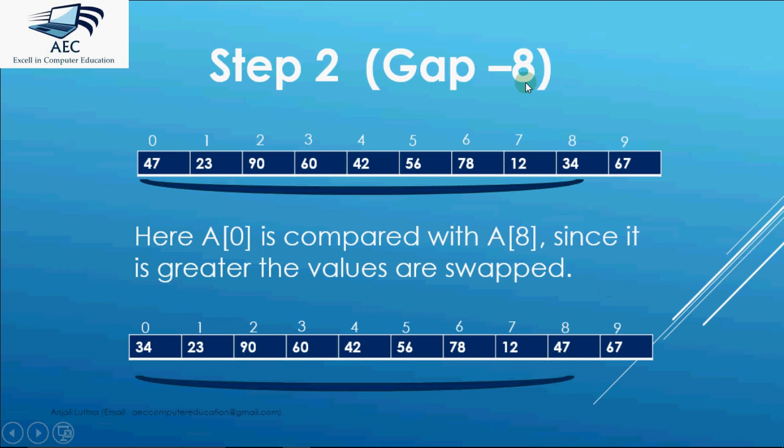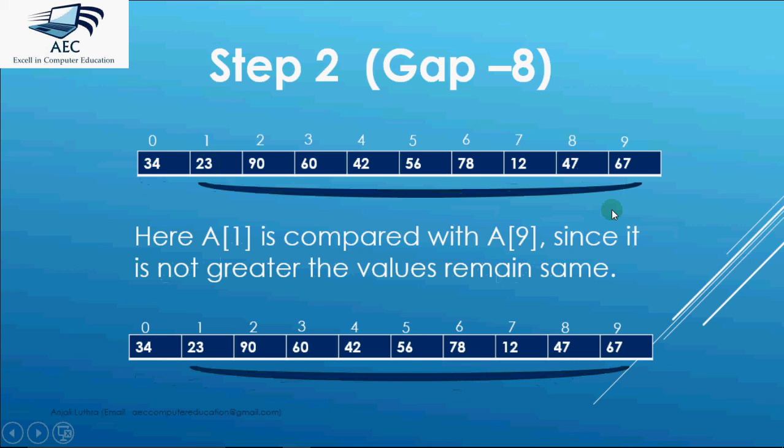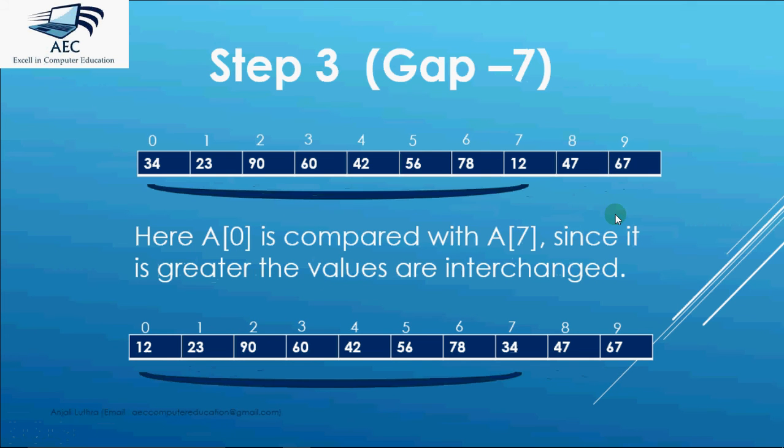Now since the gap is 8 one more comparison is possible that would be a[1] and a[9]. So that would be done in step 2's second comparison. So we will be comparing a[1] with a[9] because they are also at a gap of 8. Since 23 is not greater than 67 we don't change the values. Step 2 is over.